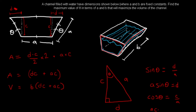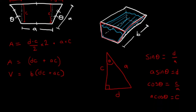Let's substitute these into our optimization equation. The volume V equals B multiplied by: D (which is A sin θ) times C (which is A cos θ), plus A times C (which is A cos θ). So we get B times (A sin θ · A cos θ + A · A cos θ). This gives an A squared term from multiplying the two A's.